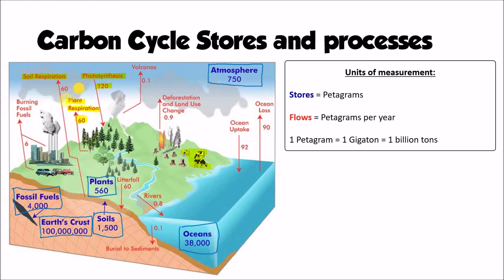Decomposition is another important process as well. So we think about what it calls here as litter fall. So taking perhaps 60 petagrams of carbon into the soil as a result of decomposition. And this is just when dead organic matter is broken down and that carbon dioxide is released as a result. And this is what helps to ensure that carbon and other nutrients are continually recycled around the world.